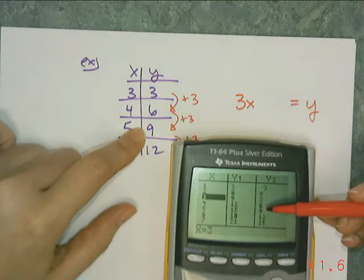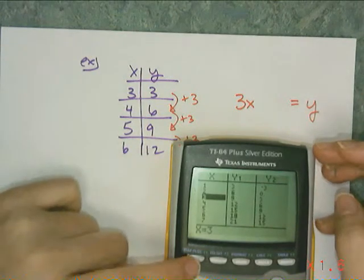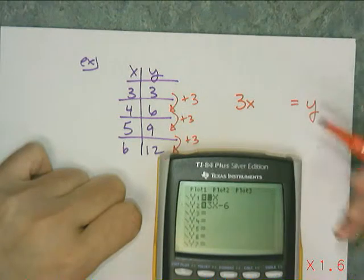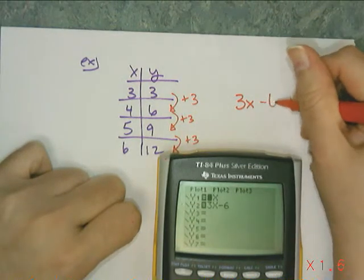At 5 I get the 9, and at 6 I get the 12. So that meant that what I have to do to fix this equation to make it work is say minus 6.